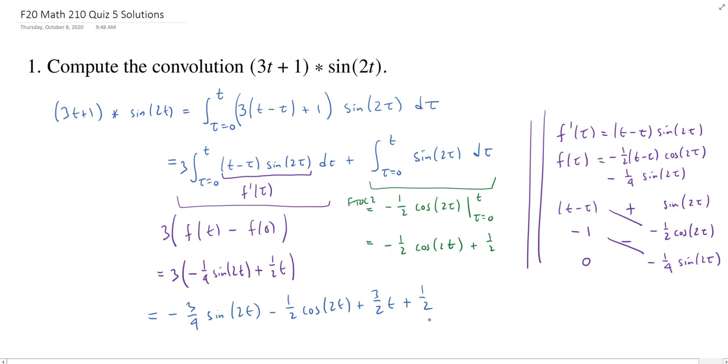Another way we could have set this up from the beginning was to break up this convolution by saying, well, this is 3t convolved with sine of 2t plus 1 convolved with sine of 2t. And that would have had basically the same effect as this first division. So either way, of course, we'll end up with the same answer. We'll see you next time.